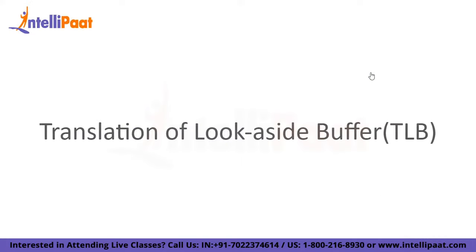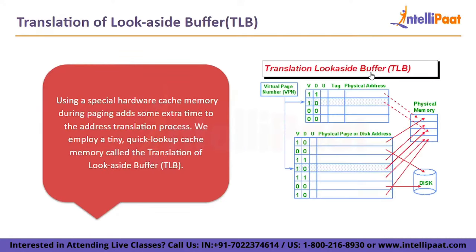The Translation Lookaside Buffer (TLB) is a tiny, quick-lookup cache memory used during paging to reduce the extra time added to the address translation process. Because TLB is a cache memory, its key benefit is speed, though it is costly. TLB is typically located halfway between main memory and the CPU cache, close enough to the CPU to be accessed more quickly than the main memory page table. TLB is made up of key-value pairs representing recent logical-to-physical memory address translations, storing only the most frequently visited and most current page table entries.